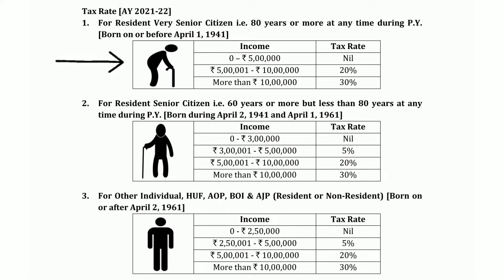Super senior citizens ke liye — yani ki jinhon ne 80 years of age attain kar liya hai — unke liye jo exempted ceiling hai woh 5 lakhs ho jata hai. Lekin yahaan par sawal ye aata hai ki kisi bhi individual ka age calculate kaise kiya jata hai for a particular previous year.